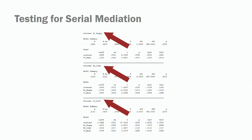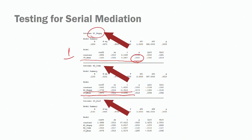First, we are looking for a positive and significant relationship between job meaningfulness — our independent variable — and our first mediator, job engagement. We do find a significant, positive relationship between meaningfulness and job engagement. This is step one. For step two, we need to find a significant relationship between mediator one and mediator two — in this case, job engagement and commitment. We do find that job engagement has a significant relationship with commitment, with p less than 0.05.